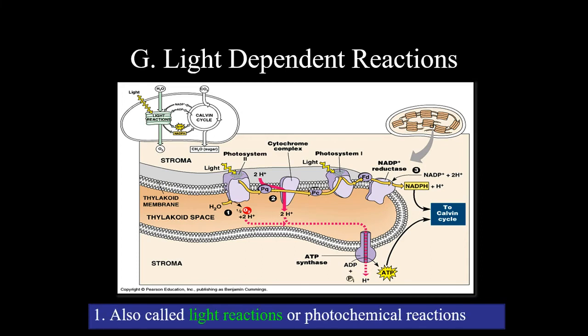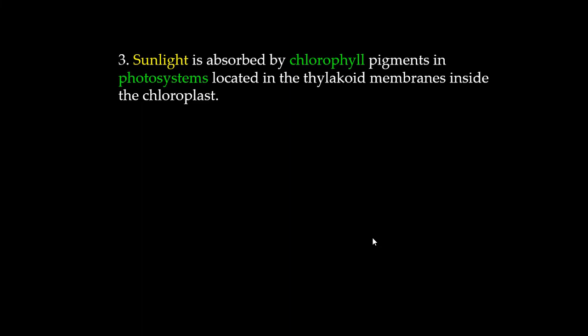To summarize the light-dependent reactions, also known as the light reaction or photochemical reaction: It occurs in the thylakoid membrane because the photosynthetic or light-trapping molecules are located there. Light is absorbed by chlorophyll pigments in photosystems located in the thylakoid membranes inside the chloroplast.